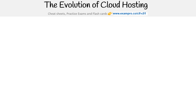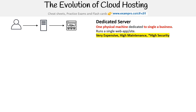To understand cloud computing, we need to look at the evolution of cloud hosting going all the way back to 1995, where if you wanted to host your website or web app, you'd have to get a dedicated server. That would be one physical machine dedicated to a single business running a single project, a site or an app.